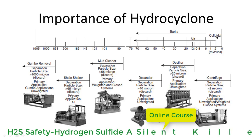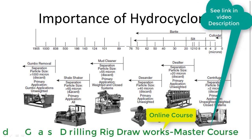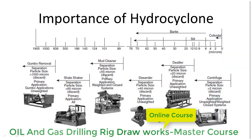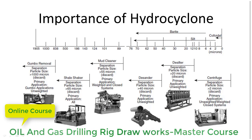As you can see, the shale shaker will remove solid particles greater than 65 or 75 microns. The desander can remove particles greater than 40 microns, the desilter can remove particles greater than 20 to 25 microns, and the centrifuge can remove particles greater than 2 microns.